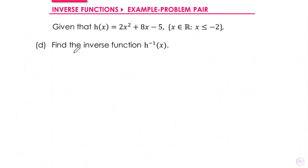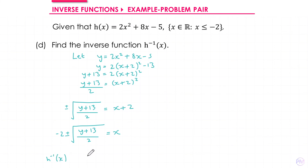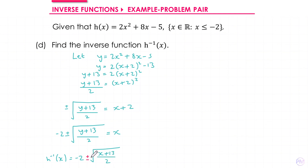Next we need to find the inverse of h. We start by letting y equal our quadratic, use the completed square form from earlier, and rearrange to make x the subject. This means our inverse function will be of the form -2 ± √((x + 13)/2). Now let's consider whether we want the plus or minus. The range of the inverse is the same as the domain of the original, so we want outputs that are less than or equal to -2. We have -2 plus or minus something — to get outputs less than -2 we want the minus. We'll also add a domain, which is the range of our original function: x ≥ -13.